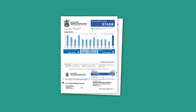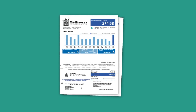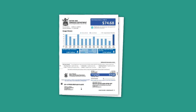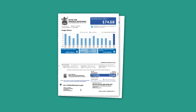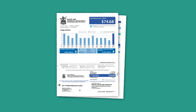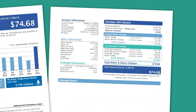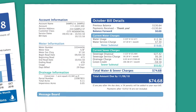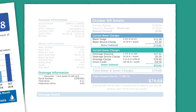The Detroit Water and Sewerage Department wants to help our customers better understand your water and sewer bill and the charges associated. Your water and sewer bill is broken down into five categories: water usage, water service charge, sewer disposal, sewer service charge, and drainage.